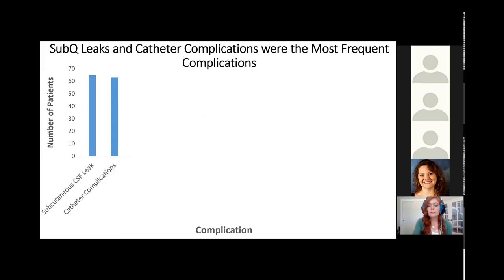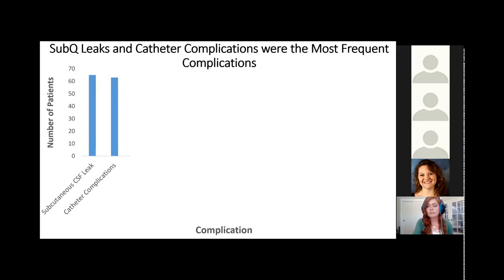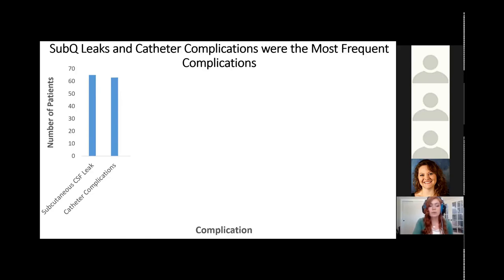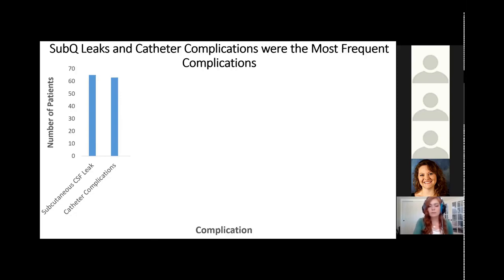Subcutaneous CSF leaks were the most common complication, followed closely by catheter complications, with 63 patients experiencing a catheter issue. Subcutaneous CSF leaks are not usually concerning because they resolve over time on their own, so they often don't need any further intervention.